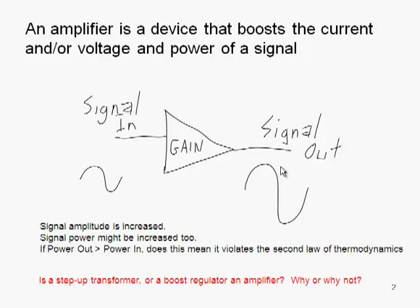In general, an amplifier is a device that boosts the current, voltage, and/or power of a signal. I've got a cartoon drawing here of an amplifier represented by this triangle where we have a signal coming into the amplifier. Here I've got a sinusoidal wave coming into the amplifier, and you can see that the signal coming out of the amplifier is a bigger signal in some manner, representing a larger voltage. The peak-to-peak voltage is larger.